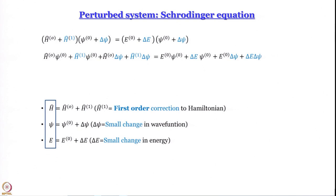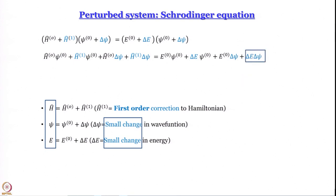The changes δE and δψ are small. When you multiply a small quantity by another small quantity — 10⁻³ times 10⁻⁵ gives 10⁻⁸ — which is smaller than each factor. So δE·δψ is going to be really, really small and we are going to neglect it. Remember, we are learning approximation methods — if we say we will not neglect any terms, there is no point in doing this exercise.